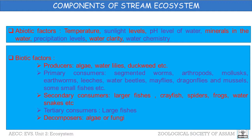Secondary consumers include larger fishes which can consume various types of primary consumers. Crayfish, spiders, frogs, or water snakes can be included under tertiary consumers. Other animal species like bird species — ducks, kingfisher — as well as plankton and various species of protists can also be included under the biotic factors of the stream ecosystem. Decomposers include algae or fungi, which play the important role of decaying the producers and consumers and freeing their organic substances to the environment.